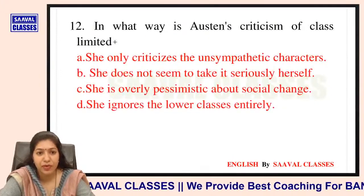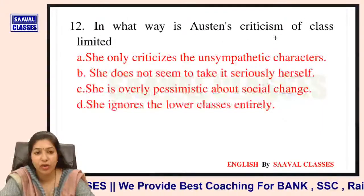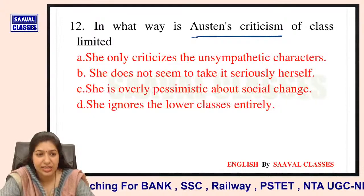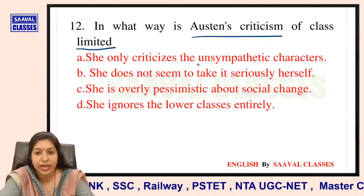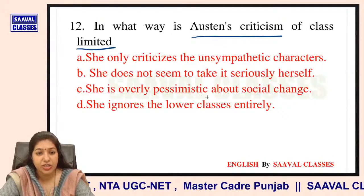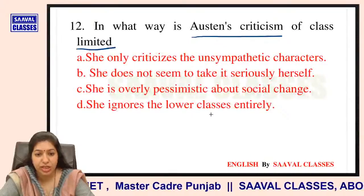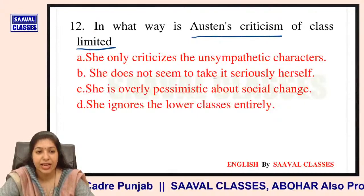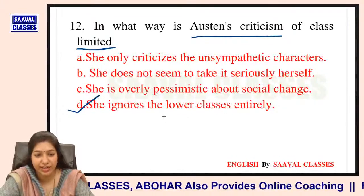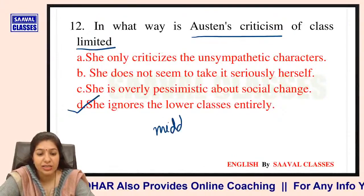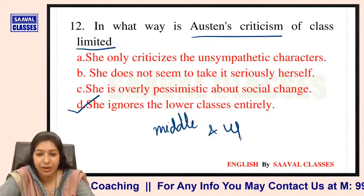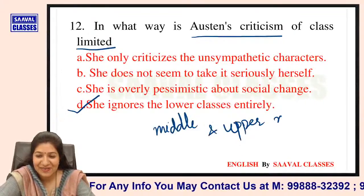Question number 12: In what way is Jane Austen's criticism of class limited? Options are: she only criticizes the unsympathetic characters; she does not seem to take it seriously herself; she is overly pessimistic about social change; ya she ignores the lower class entirely? She ignores the lower class entirely — woh yahan middle class aur upper middle class ki baat karti hain.